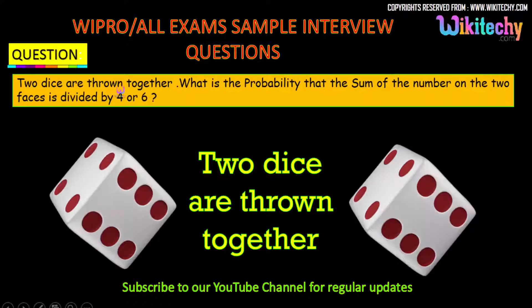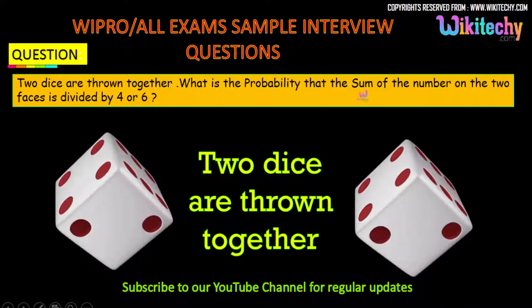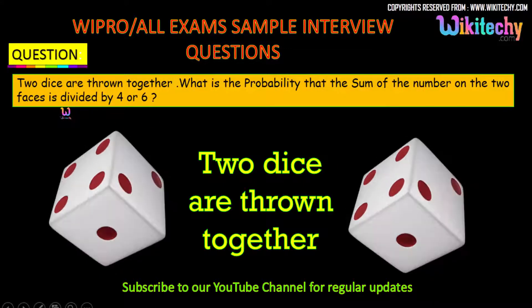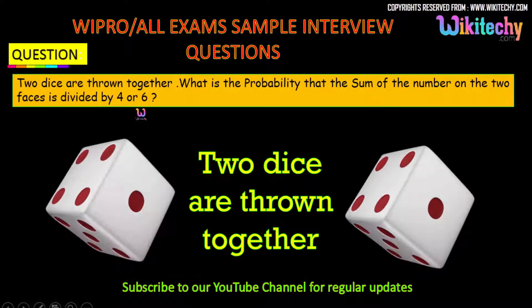Two dice are thrown together. What is the probability that the sum of the numbers on the two faces is divisible by 4 or 6?